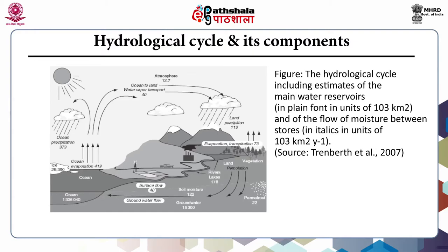You can see in this figure the hydrological cycle which includes the estimates of main water reservoirs — in plain font, it is 10³ km³ — and of the flow of moisture between the stores, in units of 10³ km³ per year. The components of the hydrological cycle include the processes like evaporation, transpiration, condensation, precipitation, interception, deposition, runoff (that is surface runoff, interflow and base flow), infiltration and percolation, sublimation, melting and ground water flow, depression storage and moisture storage in the unsaturated zone of soil.